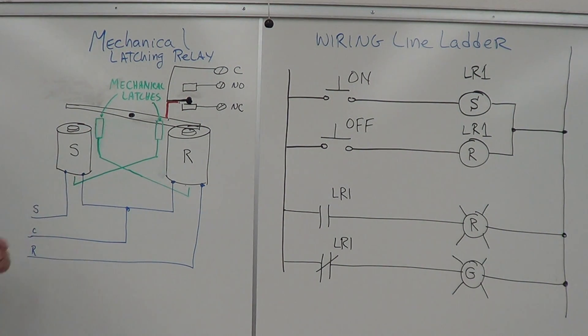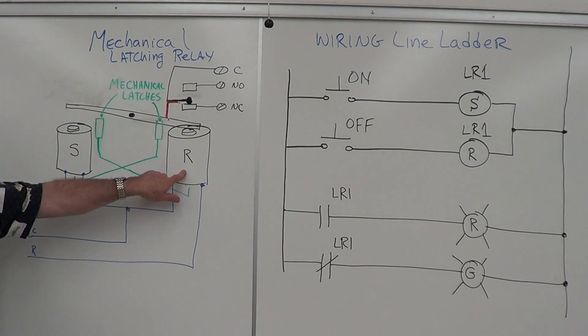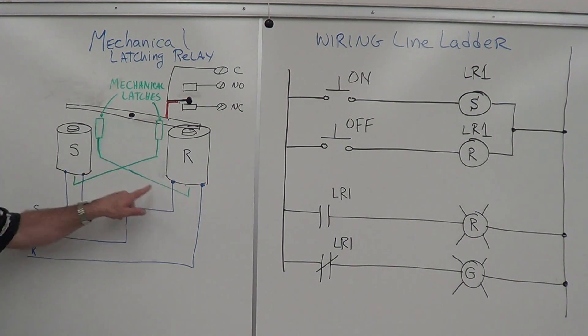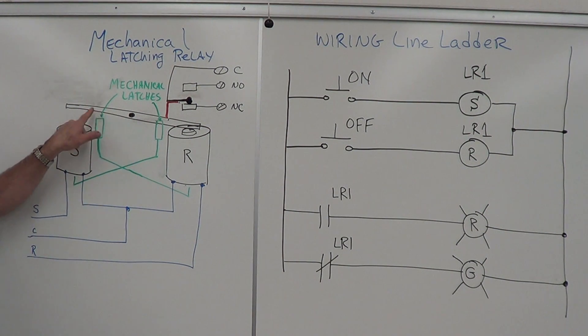Now it's on. We want to turn it off. We energize the off coil, which causes the mechanical latch to reset, pull out, release the lever, and then the bar pulls down and latches in place with its side mechanical latch. Then we can release power from the coil.